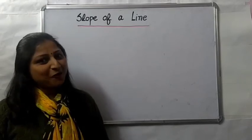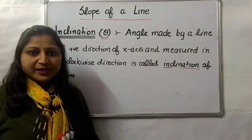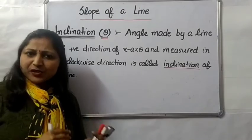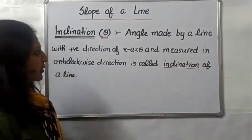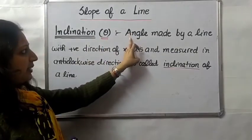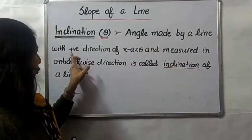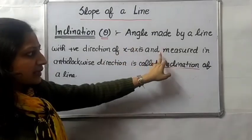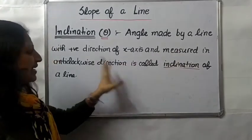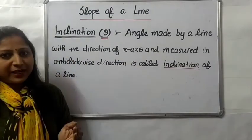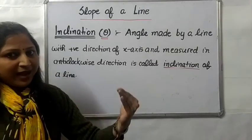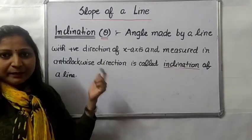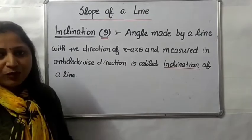Let us understand the concept of inclination. Inclination of a line means an angle which represents the direction of that line. Inclination, denoted theta, is an angle made by a line with the positive direction of the x-axis, measured in the anti-clockwise direction.